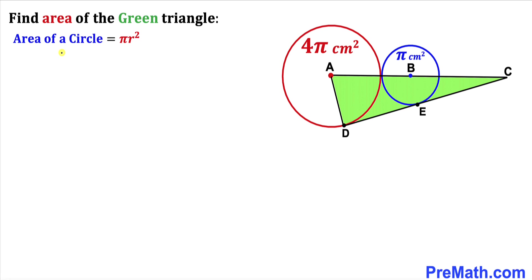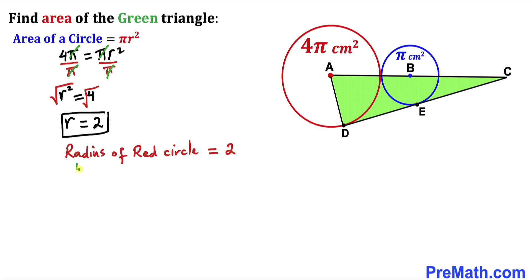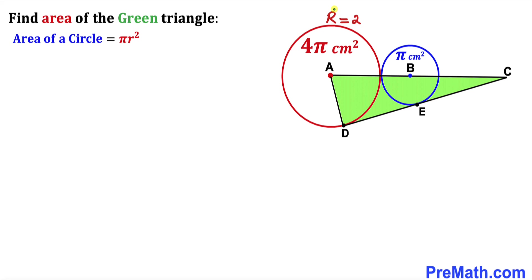Let's fill in the formula: 4π = π r². Dividing both sides by π gives r² = 4. Taking the square root, the radius turns out to be positive 2. So the radius of the red circle is 2 centimeters. I'll label the radius of this big red circle as uppercase R, so R = 2 centimeters.